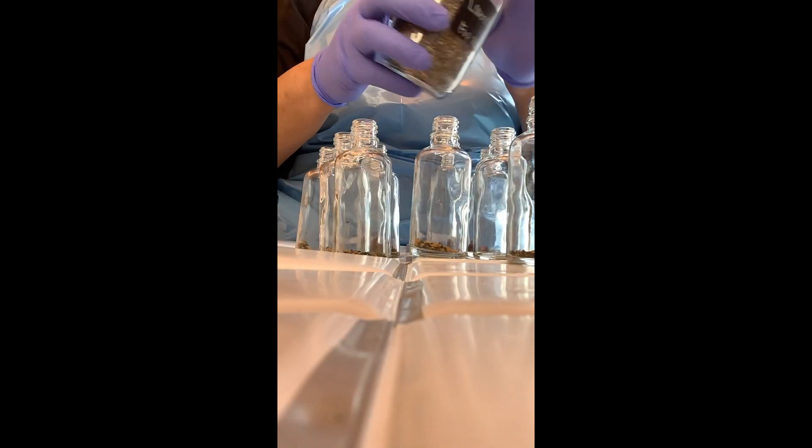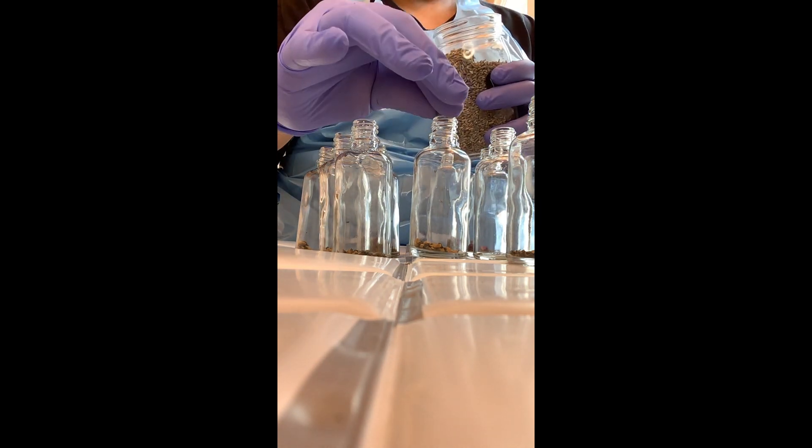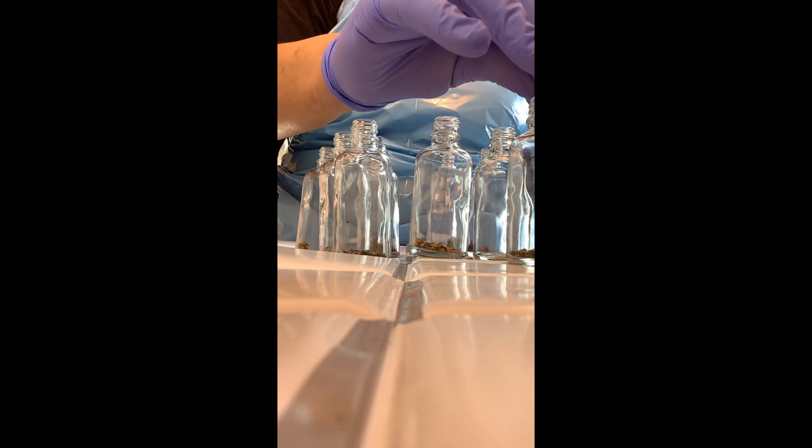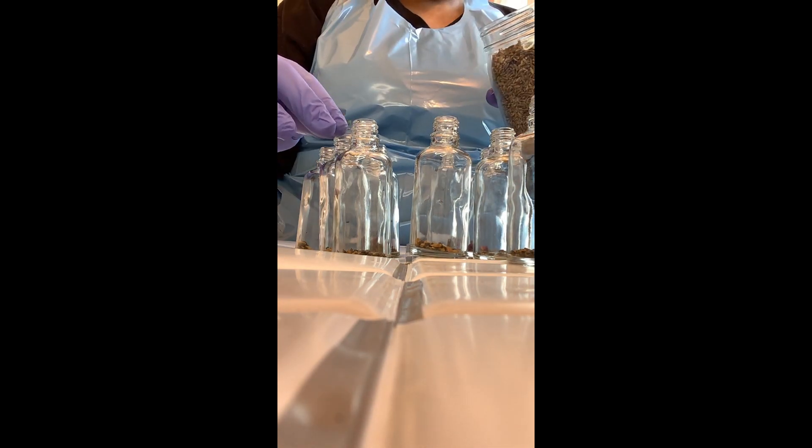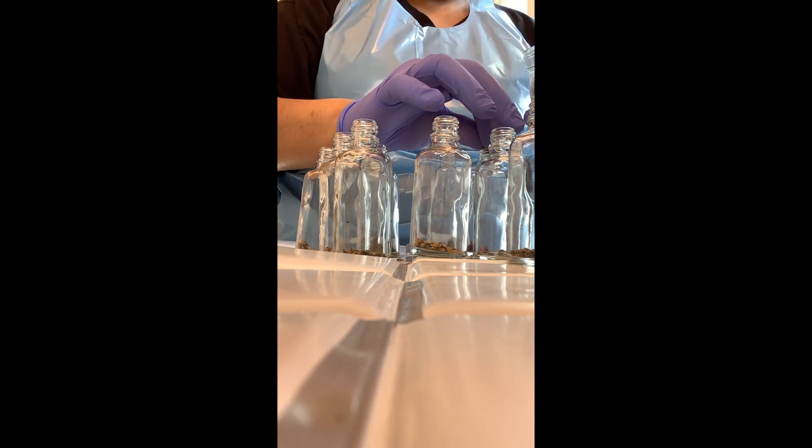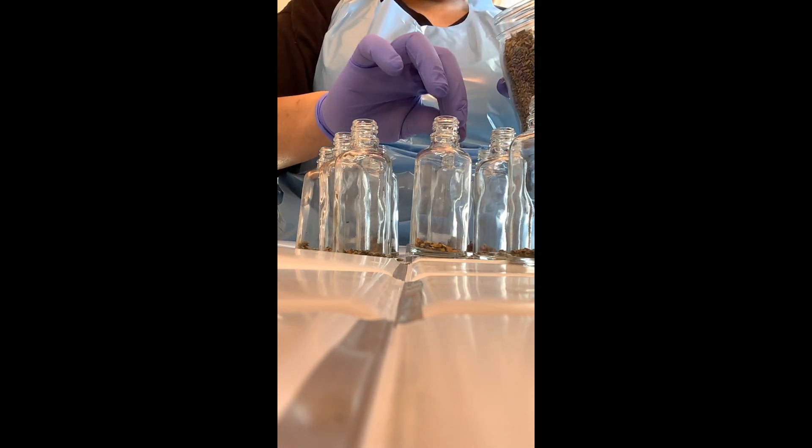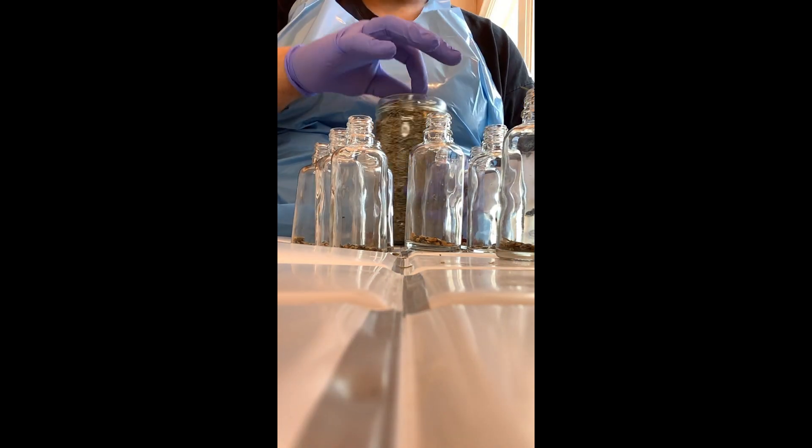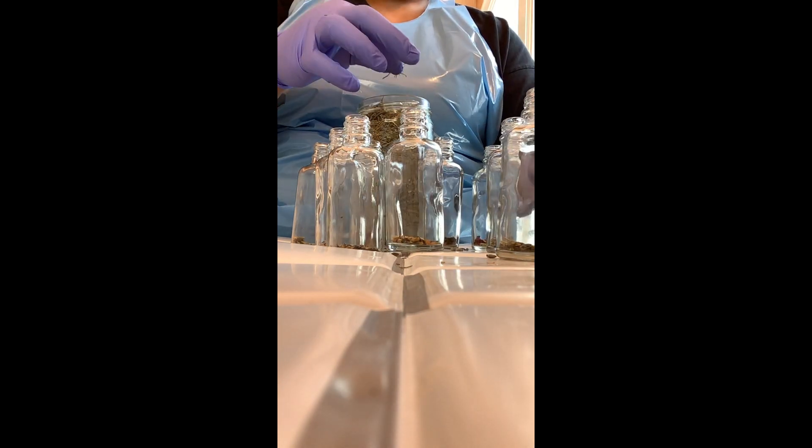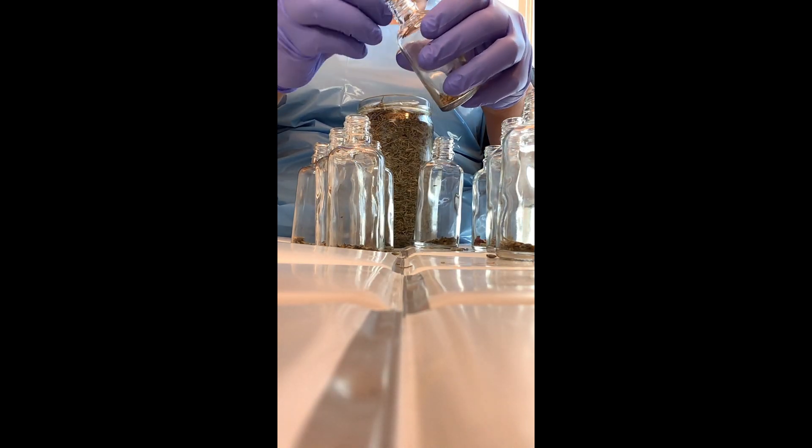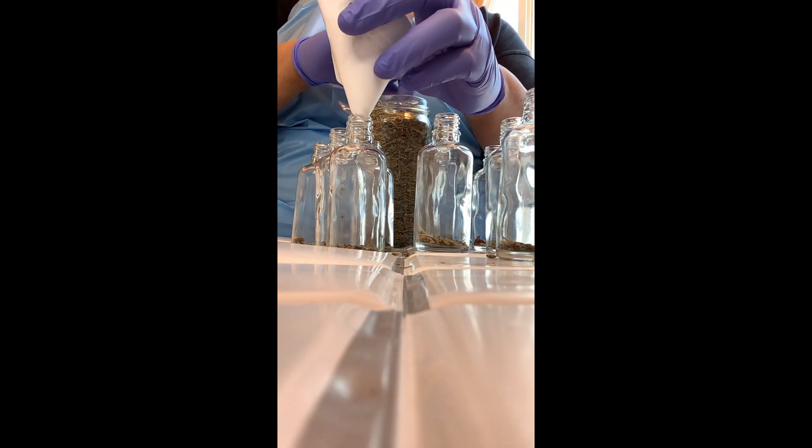Before we start making the growth oil, I want to fill up these bottles really quickly. We're gonna prep these bottles with some of the herbs and then take the older growth oil that I've been having sit for weeks and put them in here. I normally allow my growth oils to set for a good two to three weeks before transferring them into the two ounce droppers.